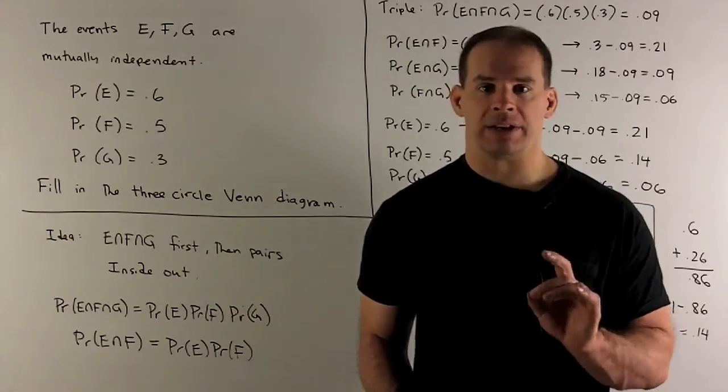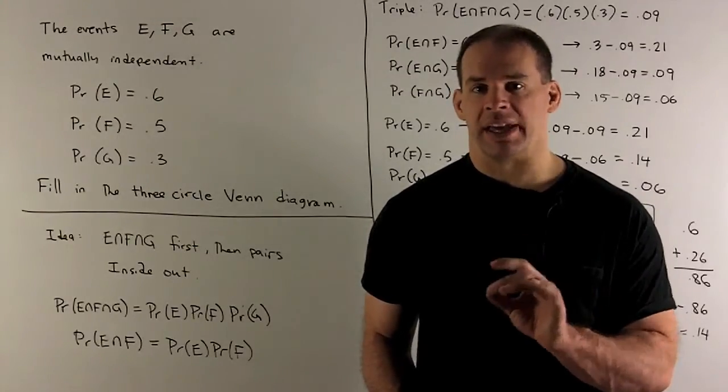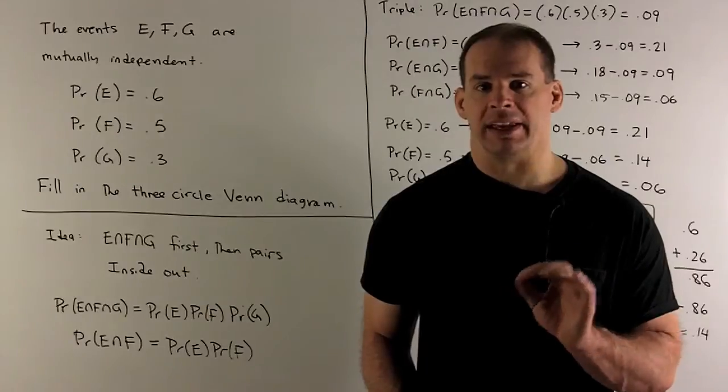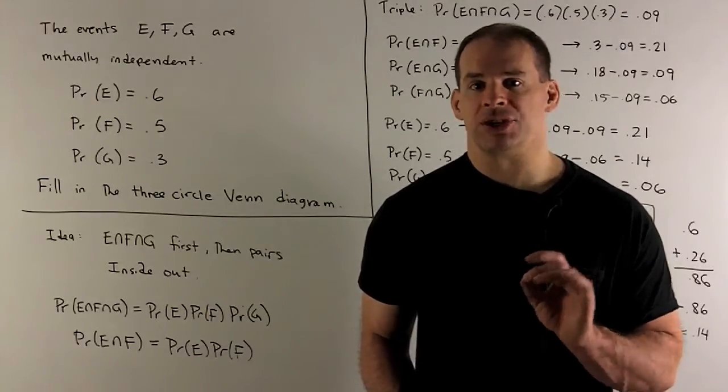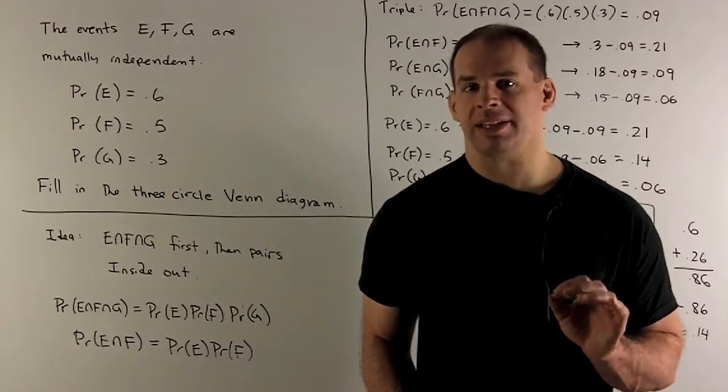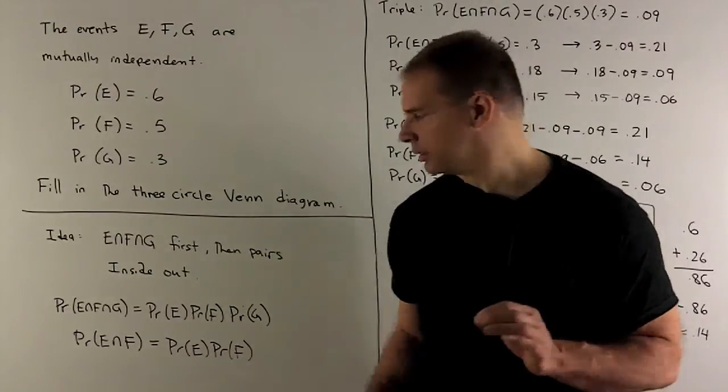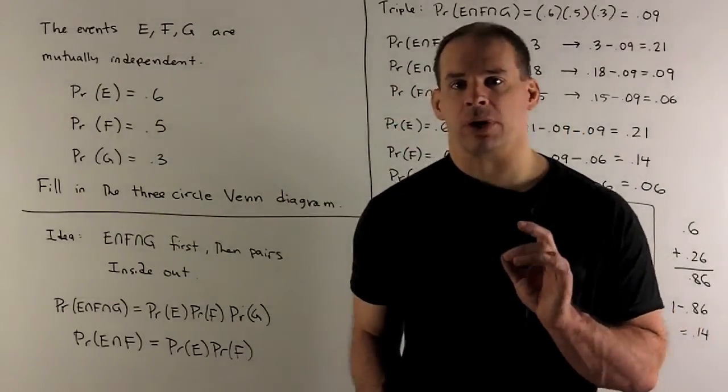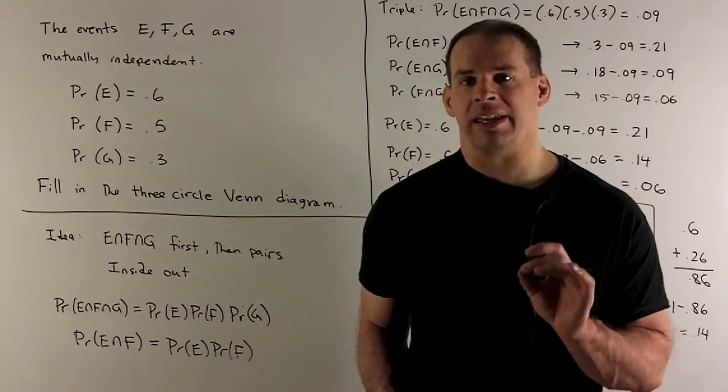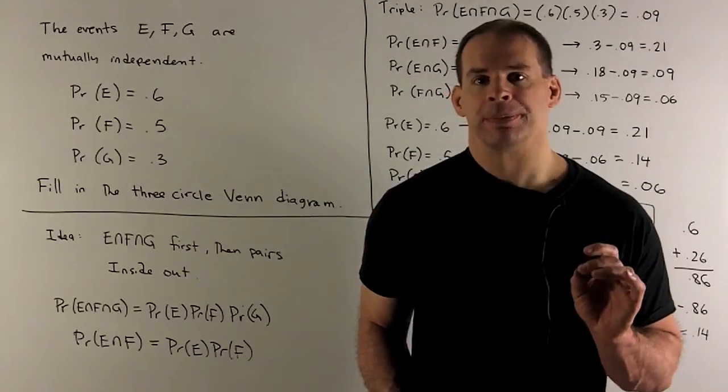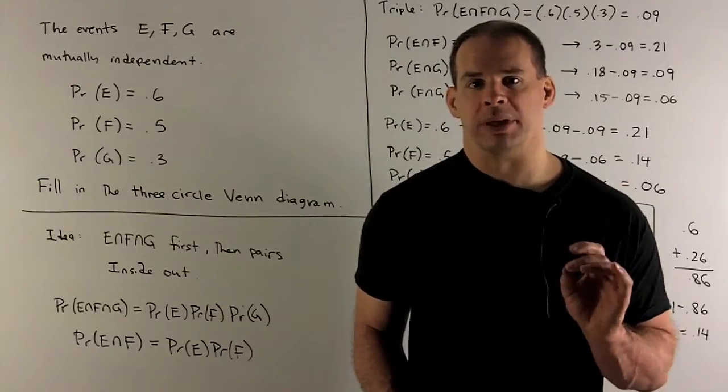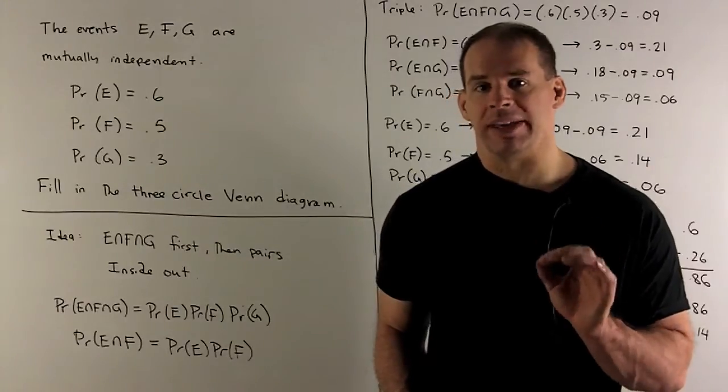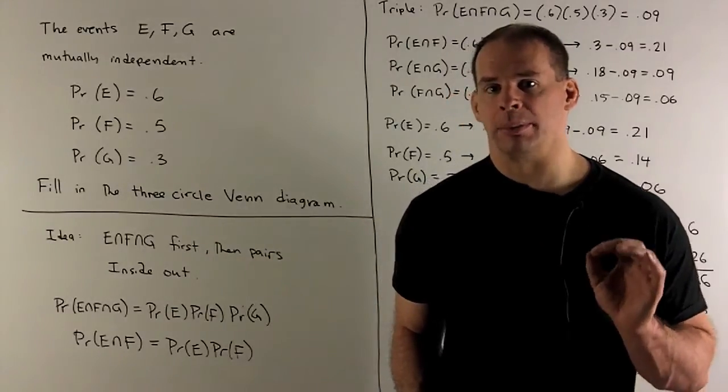Now, mutual independence means if I take any two of our events, say E and F, probability of E intersect F equals probability of E times the probability of F. If we push that one step further, we'll have probability of E intersect F intersect G equals the product of the probabilities: probability of E times probability of F times the probability of G.